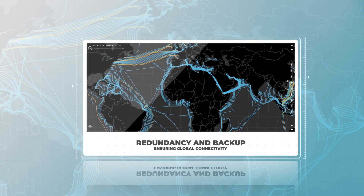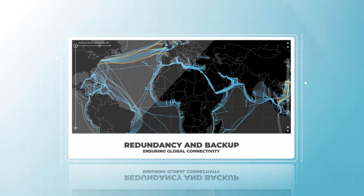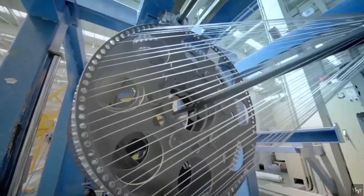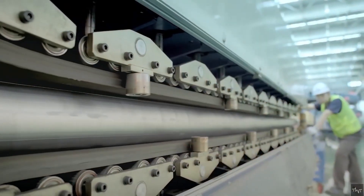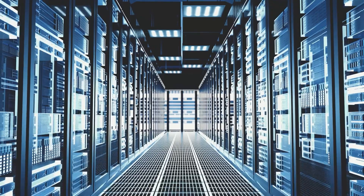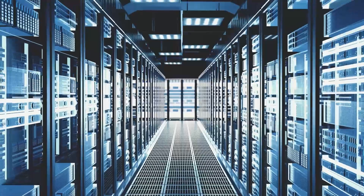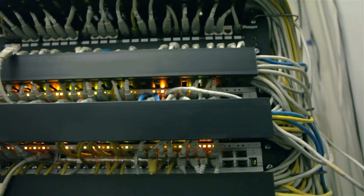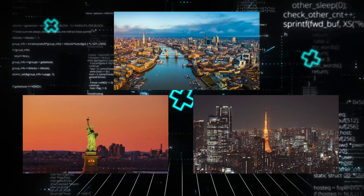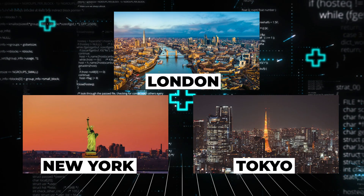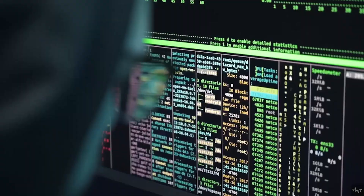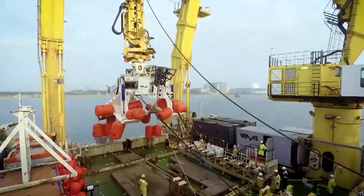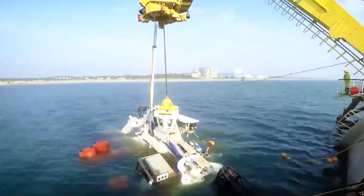Redundancy and Backup: ensuring global connectivity. Despite the vulnerability of submarine cables, the global internet infrastructure is designed to be resilient. Redundancy is a key feature of the system — major data centers in cities are connected by multiple cables, meaning that if one cable is damaged, data can be rerouted through another. For example, cities like London, New York, and Tokyo are hubs of internet traffic connected to multiple submarine cables. This ensures that if one cable is cut or damaged, internet service won't be completely interrupted.